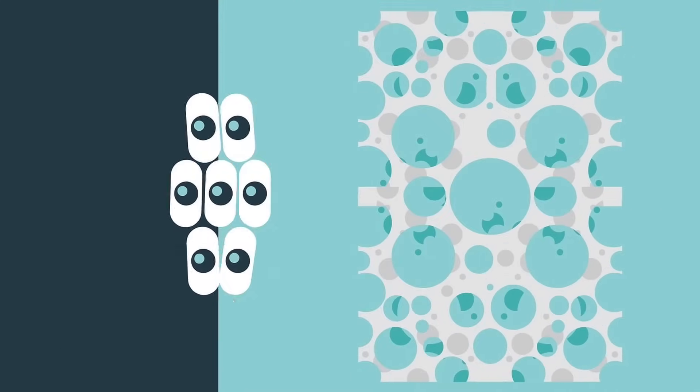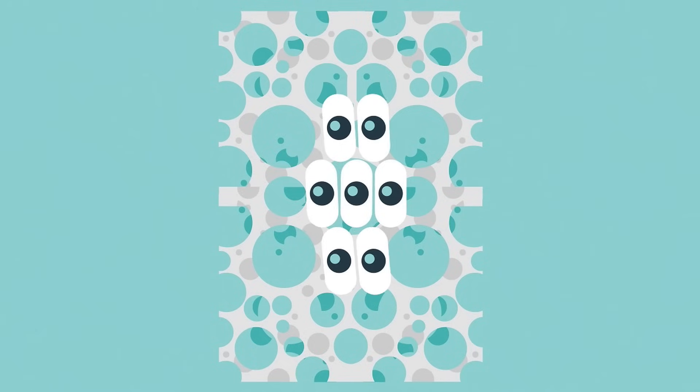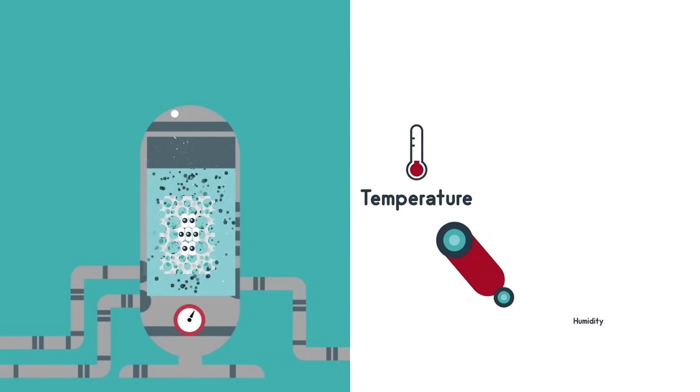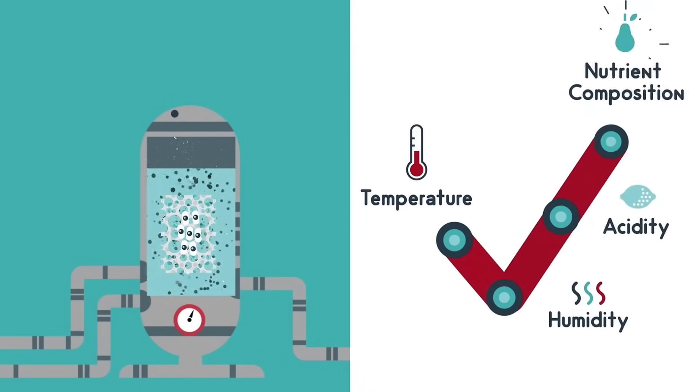They then add the patient's stem cells to this lattice and place it in a bioreactor, a device that will simulate all of the conditions found inside the body. Temperature, humidity, acidity, and nutrient composition all need to be just right for the stem cells to differentiate into osteoblasts and other cells, colonize the mineral lattice, and remodel it with living tissue.